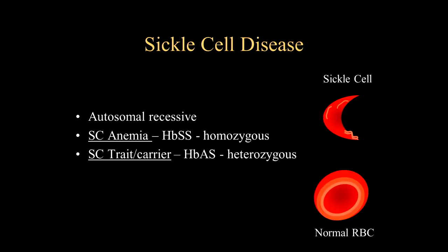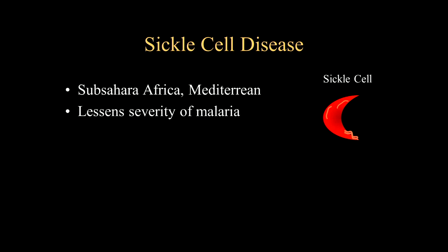Sickle cell disease is an autosomal recessive disease. If both alleles are involved with homozygous disease, you actually have sickle cell anemia. If just one allele is involved, it's a heterozygous presentation — this is sickle cell trait, or the carriers of disease. When you have abnormal configuration of the hemoglobin and are exposed to extremes of temperature, stress, or dehydration, you can have the sickling configuration of the red blood cell.